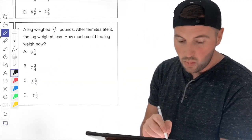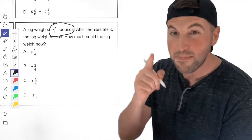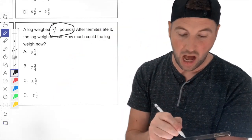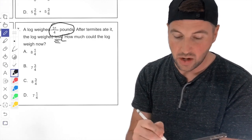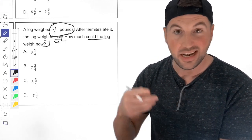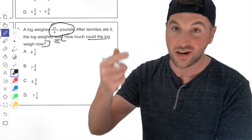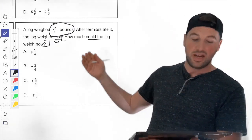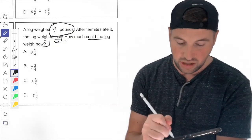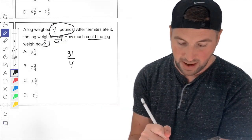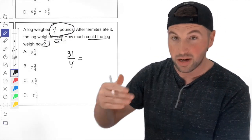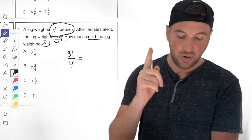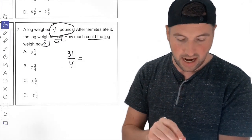Number seven: a log weighed 31 fourths pounds. After termites ate it, the log weighed less. How much could the log weigh now? You need to find the one that's less than 31 fourths. Instead of changing all the answer choices to improper fractions, let's just change 31 fourths to a mixed number. Go ahead and figure out which weight is less than that.